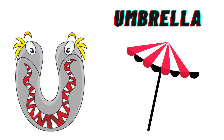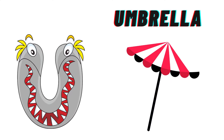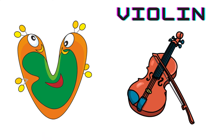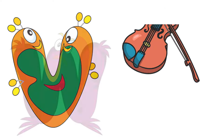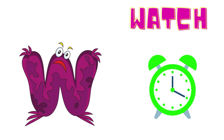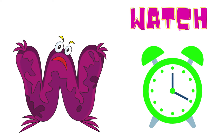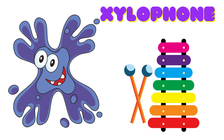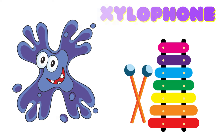U is for Umbrella, U-U-Umbrella. V is for Violin, V-V-Violin. W is for Watch, W-W-Watch. X is for Xylophone, X-X-Xylophone.